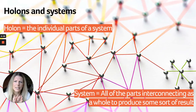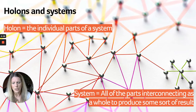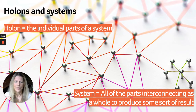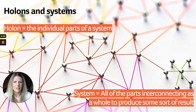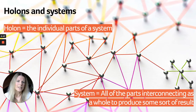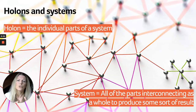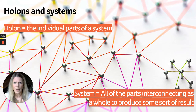It starts off with understanding the difference between parts of systems. A holon is a part of a system, a single individual part, and a system is all of those parts interconnecting together, coming together as a whole to produce some sort of results. So let's take a look at what that means.